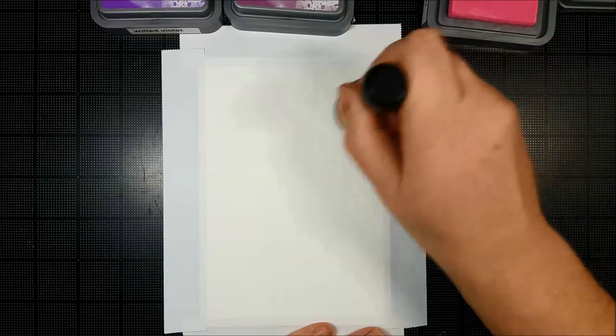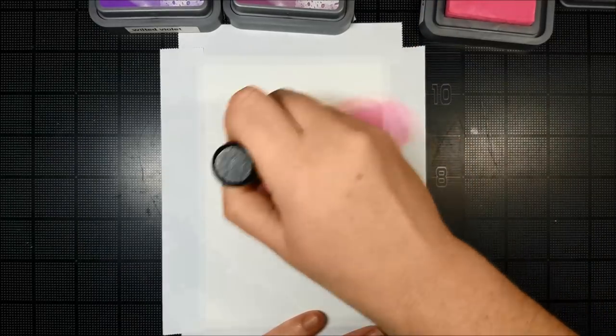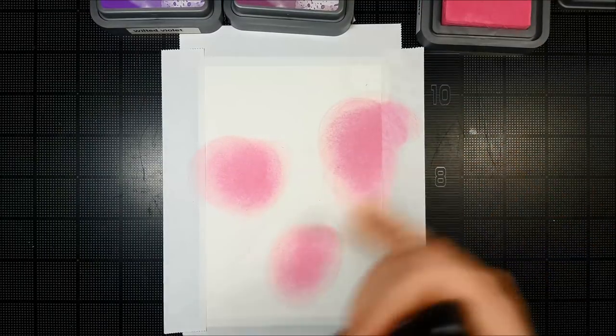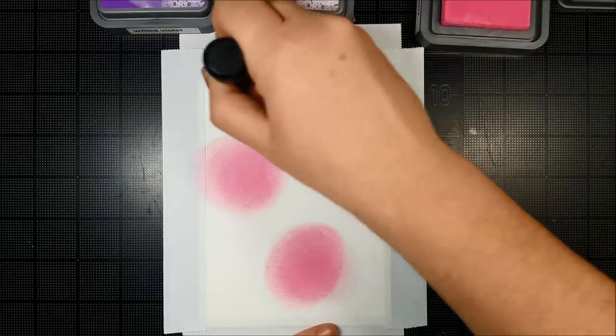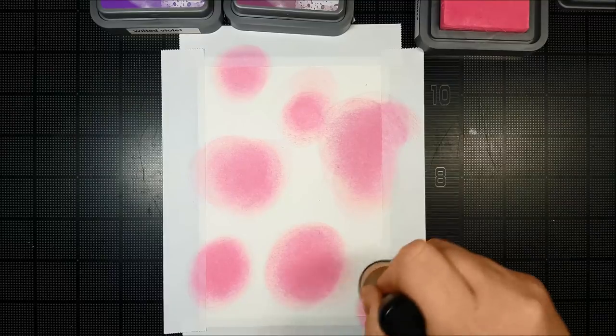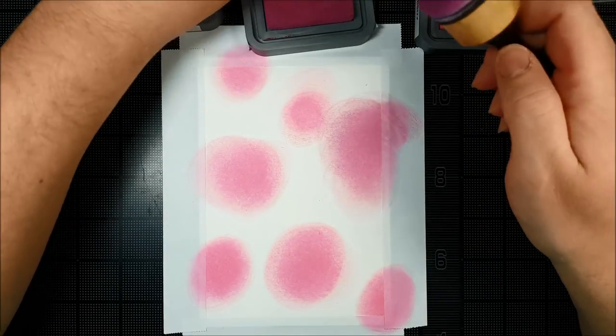I'm going to start with Picked Raspberry and we're just going to make a blended background. Some nice pinks and shades of purple because they're my favorite colors. We're just going to randomly blend. I'm going to start with our lightest color which of course is our Picked Raspberry and work in our purples.